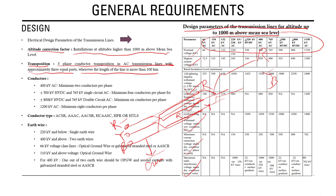For conductors, 400 kV lines require a minimum of two conductors per phase. For 500 kV HVDC and 765 kV single AC circuit, a minimum of four conductors per phase is required. For 800 kV HVDC and 765 kV double circuit AC, a minimum of six conductors per phase is required. For 1200 kV AC transmission, a minimum of eight conductors per phase is required.